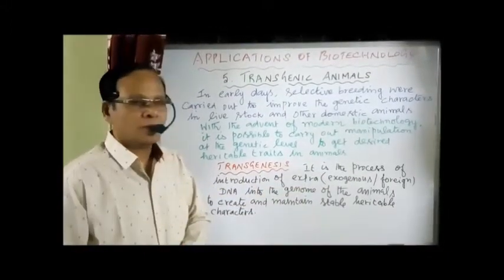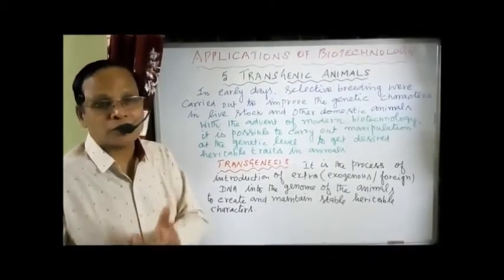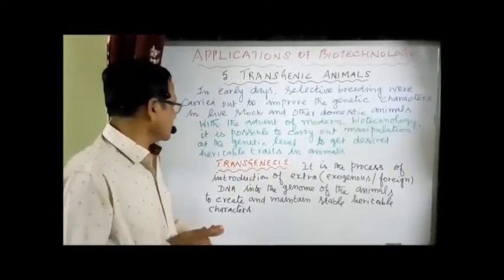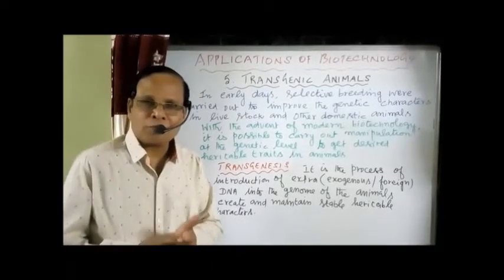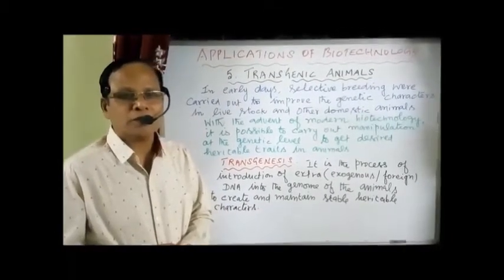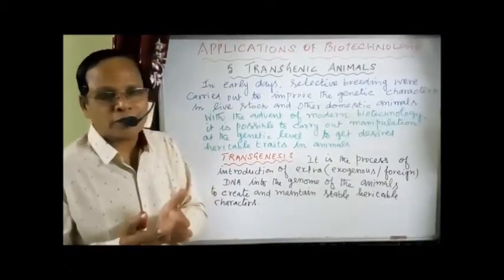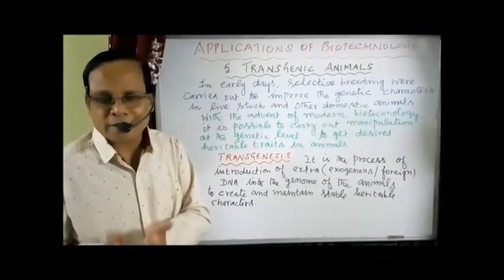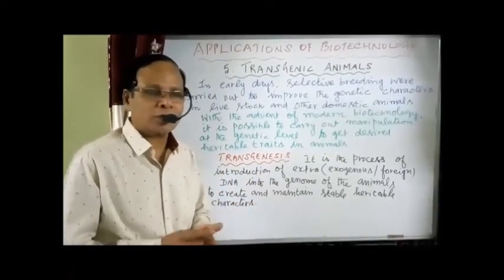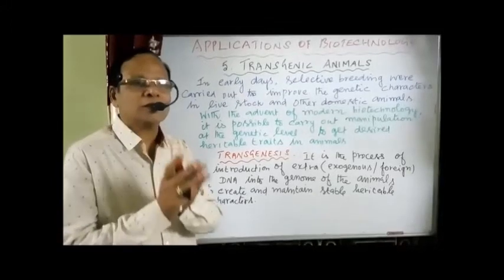With the advent of biotechnology, it is possible to produce transgenic organisms. With the advent of modern biotechnology, it is possible to carry out manipulation of genetic material — manipulation means addition, deletion, synthesis of DNA, etc. — processes carried out at the genetic level to get desired characters in animals, through recombinant DNA technology, so that we can incorporate desired characters in the animals.